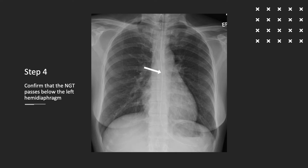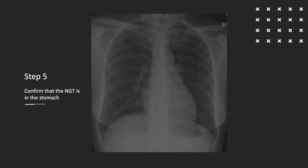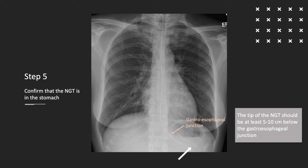The nasogastric tube should then be seen to follow the path of the lower esophagus and pass below the level of the left hemidiaphragm. The tip of the nasogastric tube should be clearly seen beyond the level of the gastroesophageal junction for it to be confirmed within the stomach.